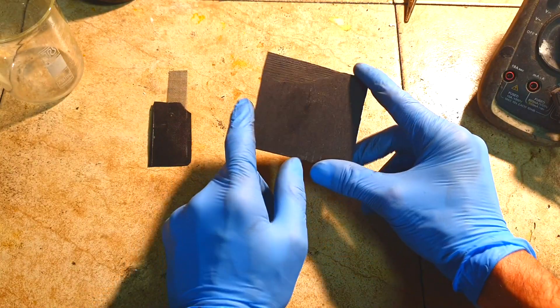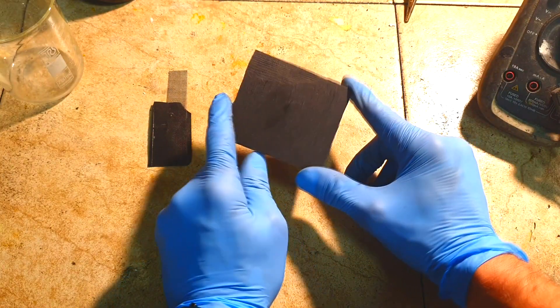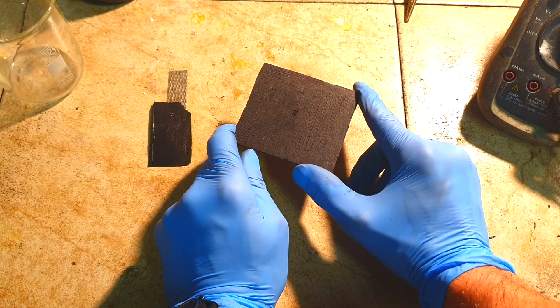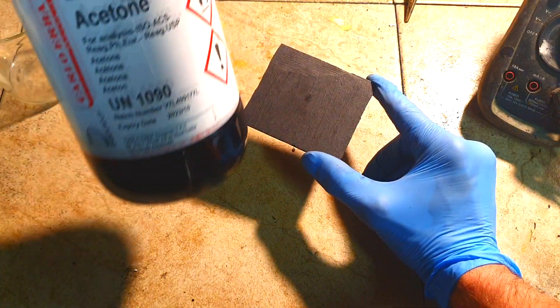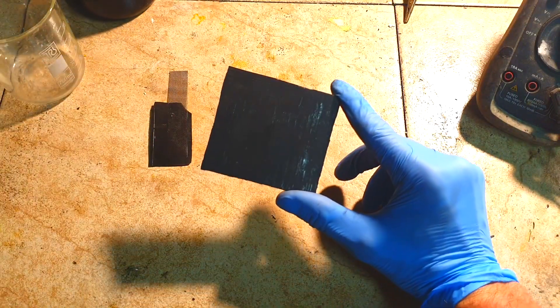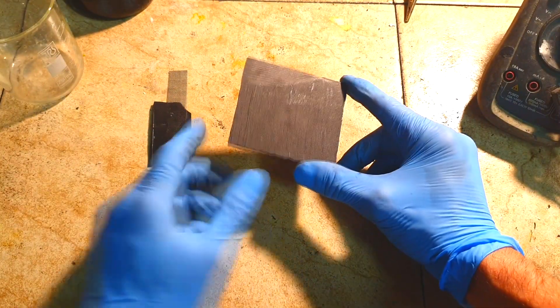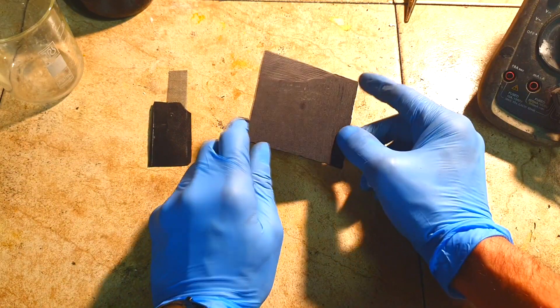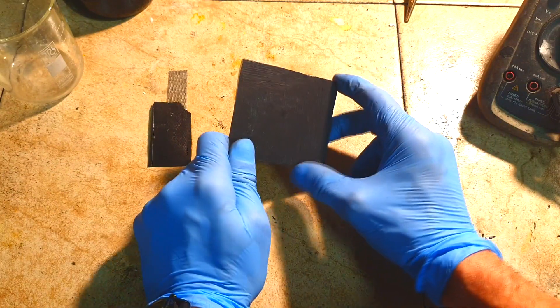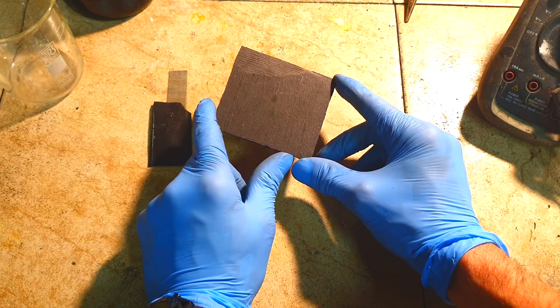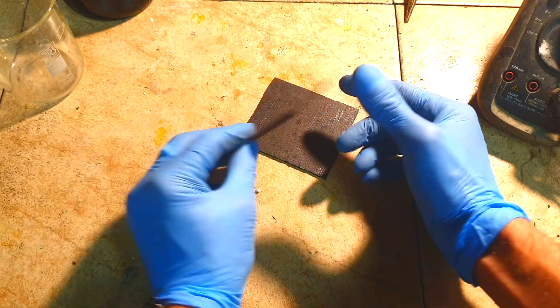What you need to do is use some acetone to dissolve this plastic again and you can reshape it. Or you can use some heat. Around 100 degrees Celsius, this kind of plastic will soften and you can reshape it if you want. Here I have another example.